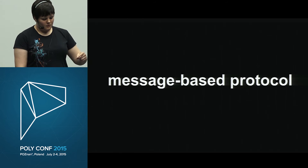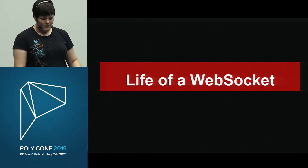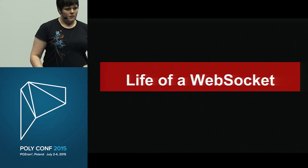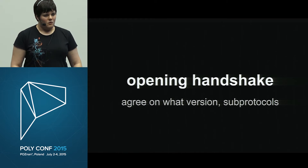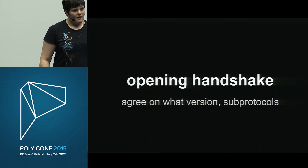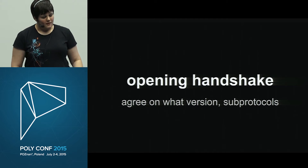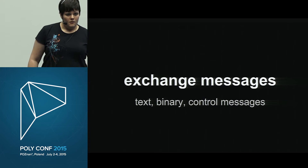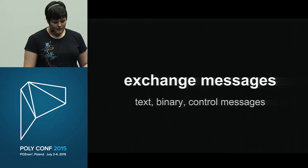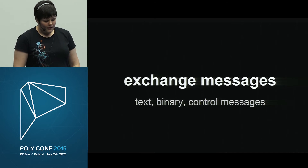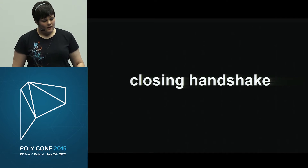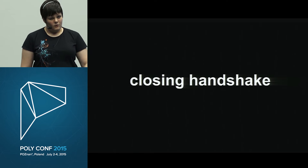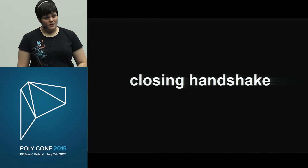Let's go through the life of a WebSocket to give you a framework for the rest of the talk. You open the WebSocket by doing an opening handshake, where you agree on what version of WebSockets you're using and any subprotocols. Then you can start exchanging messages — data messages can be either UTF-8 text or binary blobs. There are also control messages that aren't sending application data. At the end, you do a closing handshake.